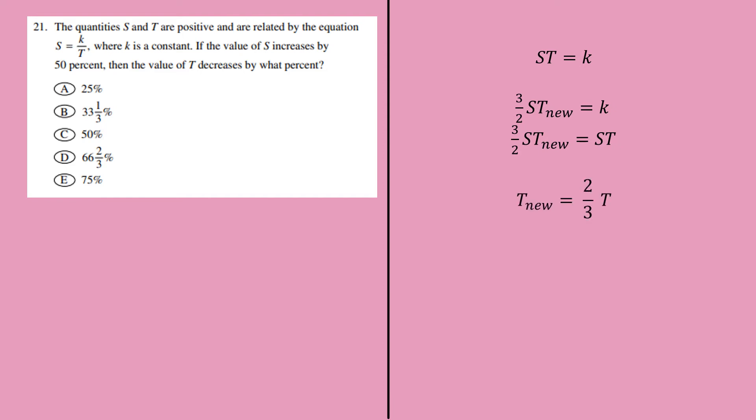So simplifying this, I can find my new T to be two-thirds of T. So it looks like the original T is reduced and only two-thirds of the original T is my new T. So the decrease change will be 1 minus two-thirds for T, which is one-third.